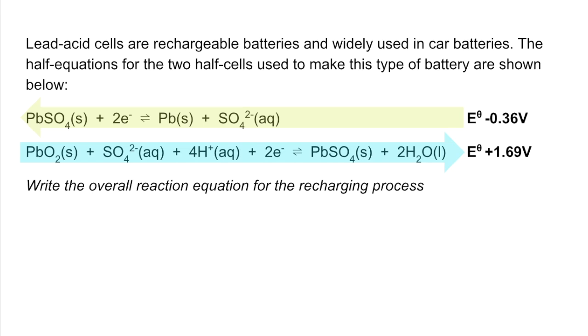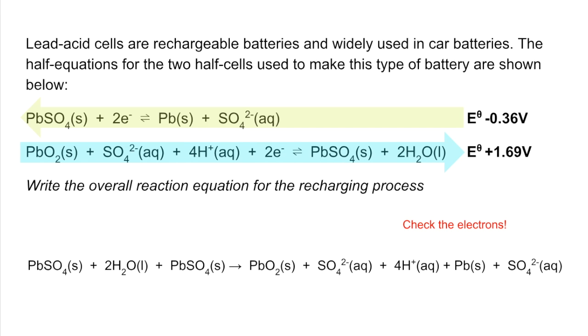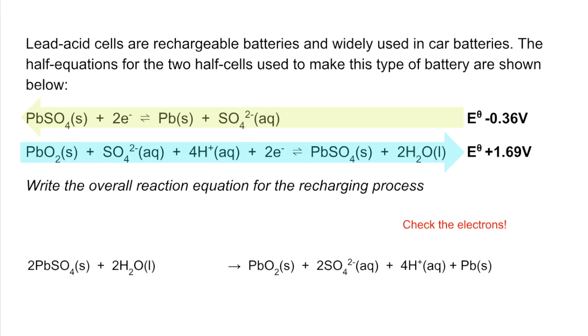Quick check of the electrons: two on each side, so we don't need to multiply out, and then just add them together. So there's the recharging reaction, and we need to simplify that down. It's a little bit messy at the moment, and it simplifies to that.